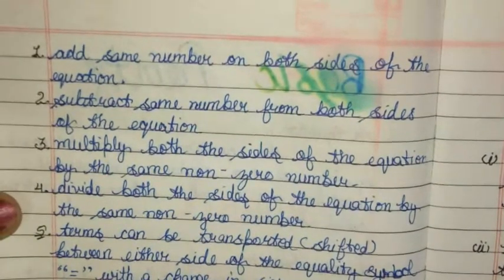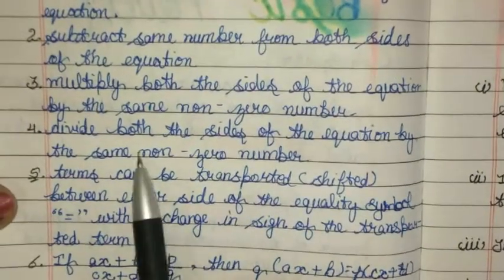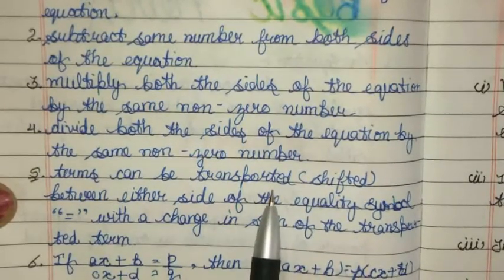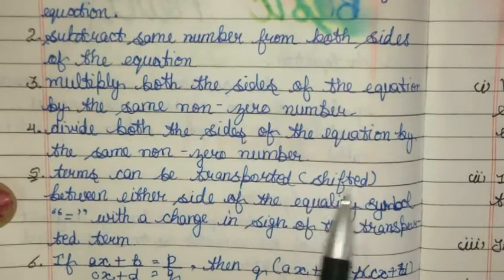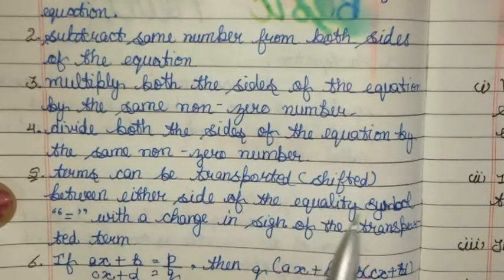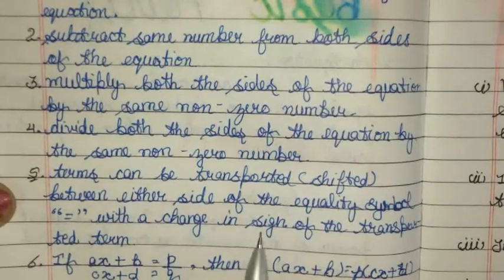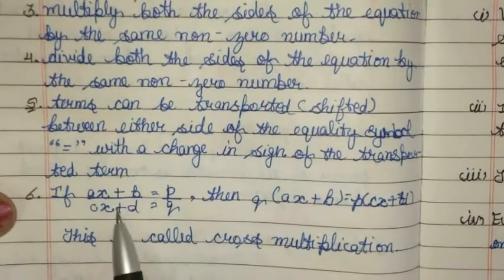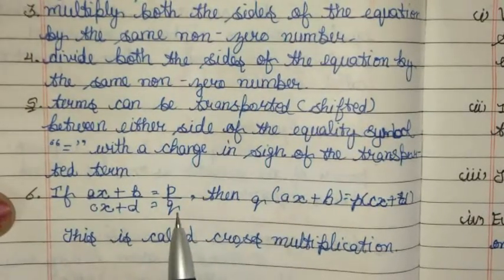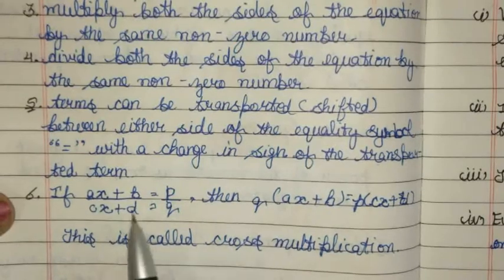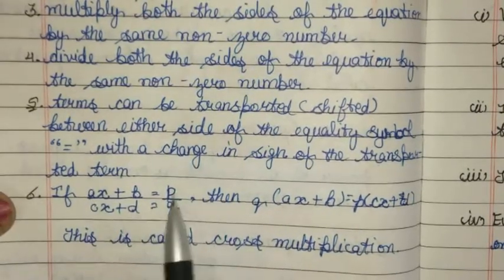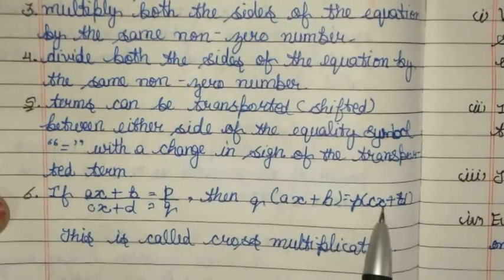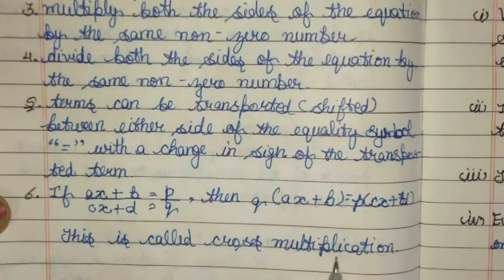We can also divide both sides by the same non-zero number. Terms can be transposed — shifted between either side of the equality symbol — with a change in the sign of the transposed term. If ax + b / cx + d = p/q, then by cross multiplication: q(ax + b) = p(cx + d). This is called cross multiplication.